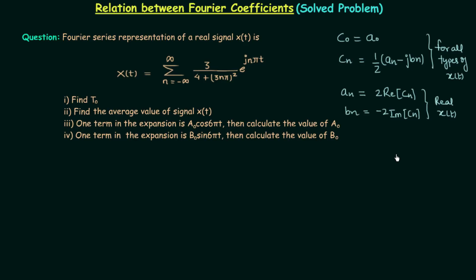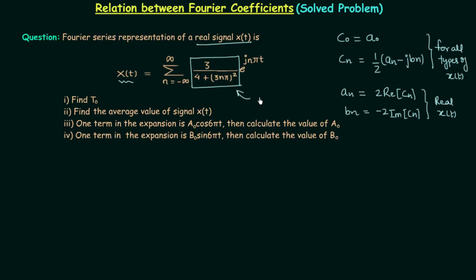In this lecture we are going to solve one problem based on the results we have obtained. The Fourier series representation of a real signal x(t) is given. Since x(t) is real, we can use this result. The signal x(t) equals the summation from n = -∞ to ∞ of [3 / (4 + 3nπ)²] e^(jnπt). So we have the complex exponential Fourier series, and therefore 3 / (4 + 3nπ)² is Cn.